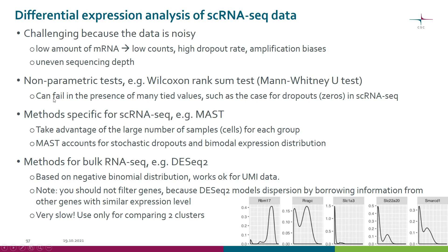The thing to remember with the Wilcoxon test is that it can fail in the presence of many tied values — the same value. This is the case because we have a lot of zeros due to dropouts in our data. Some tests are specific to single cell RNA-seq, like the MAST test, which can take advantage of the large number of cells. We can consider the cells as samples, giving us a large number of samples per group or cluster. MAST can account for those stochastic dropouts and bimodal expression distribution.